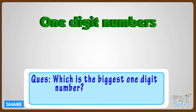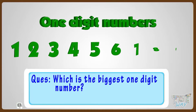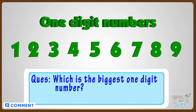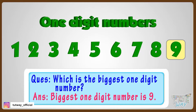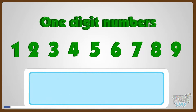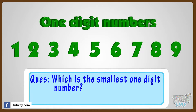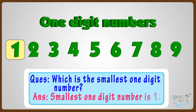Can you tell me which is the biggest one-digit number? Let's find it out! One-digit numbers are from 1 to 9, and the biggest number here is 9. So the biggest one-digit number is 9. The smallest one-digit number is also easy — one-digit numbers are 1 to 9, and the smallest is 1. Good!